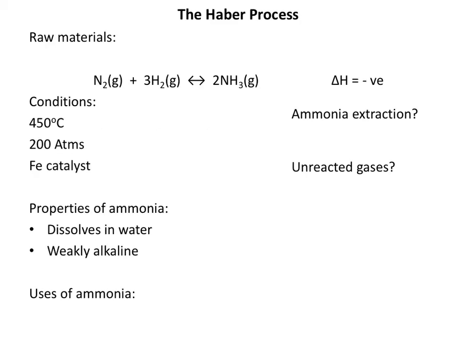Here you can see we've got the reaction between nitrogen and hydrogen, which is the Haber process essentially. The specification says you need to learn these three conditions: the reaction is carried out at 450 degrees C, it uses 200 atmospheres pressure — that's huge pressure, 200 times atmospheric pressure — and we use an iron catalyst. We're going to justify those conditions in a moment.